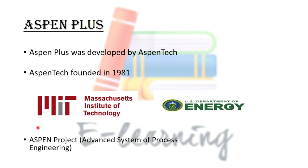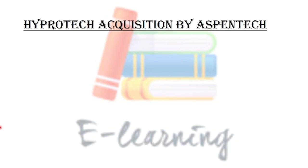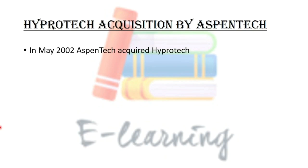The project was called the ASPEN Project — ASPEN means Advanced System for Process Engineering. Then in May 2002, AspenTech, the American company, acquired Hyprotech, the Canadian company. Since HySys was developed by Hyprotech, as a result of this acquisition, HySys became owned by AspenTech.